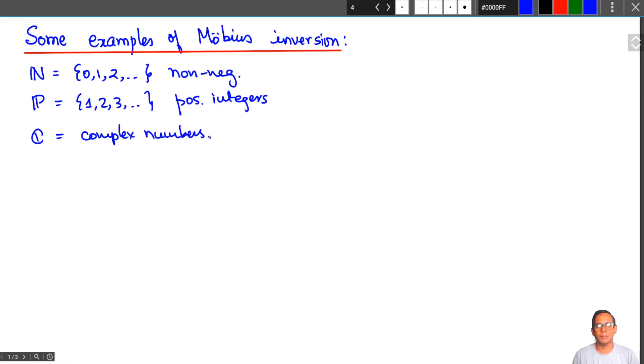Basically you can replace the complex numbers by any commutative unital ring. But if you don't know what a commutative unital ring is, don't worry about it right now. Just think about complex numbers or real numbers.